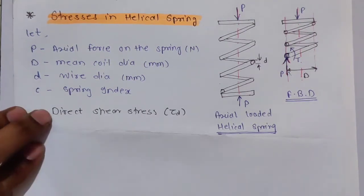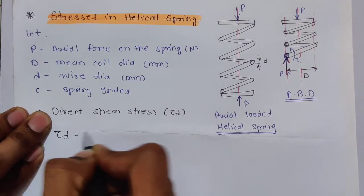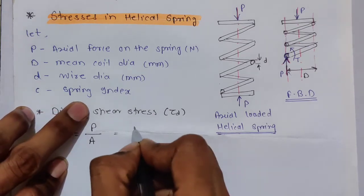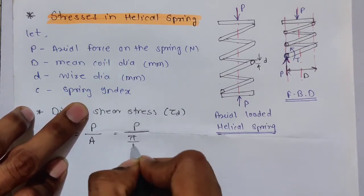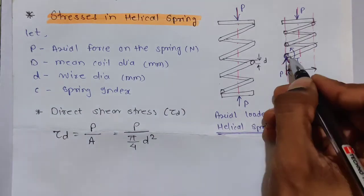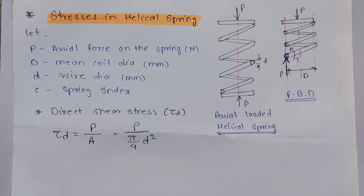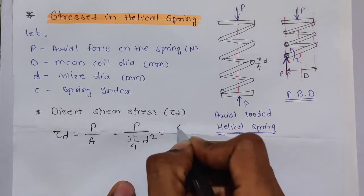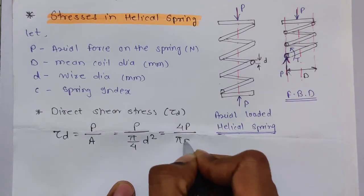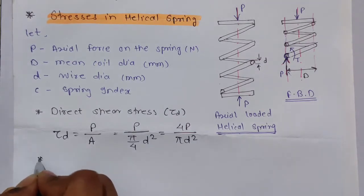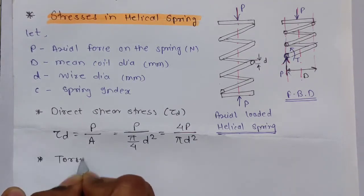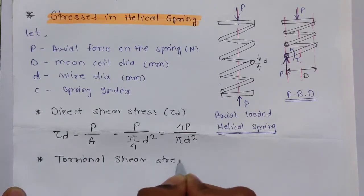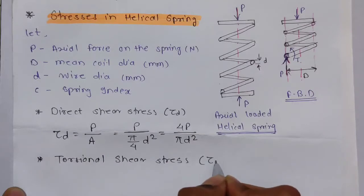The first stress is direct shear stress τ_d, which equals force divided by the cross-sectional area of the spring wire: P divided by (π/4)·d², which simplifies to 4P divided by π·d². The second stress is torsional shear stress.